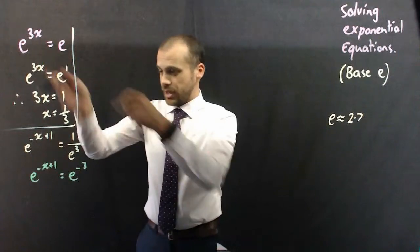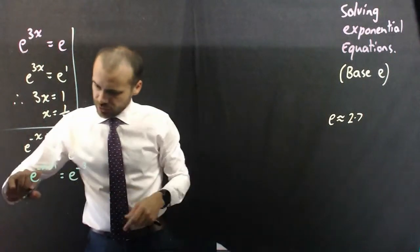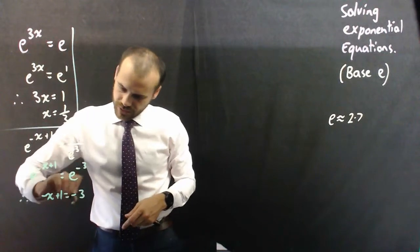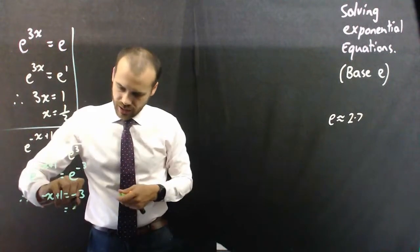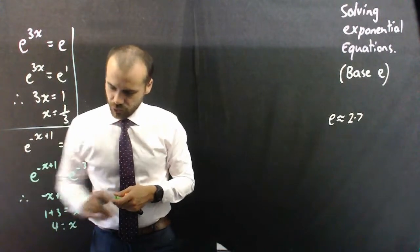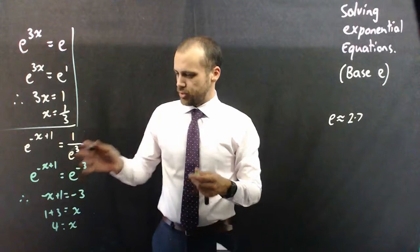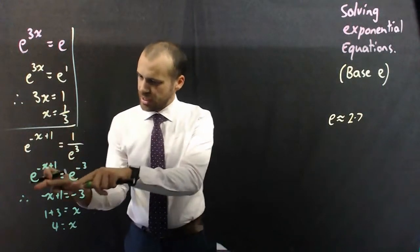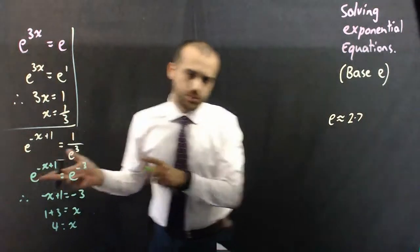Now that it looks like that, I can just do my little therefore, and I get negative x plus 1 equals negative 3. And shuffle, shuffle, x equals 1 plus 3. So, x equals 4. So there's another example, slightly more complicated, but you really just want to get it to that. Once it looks like that, the game's pretty much over.